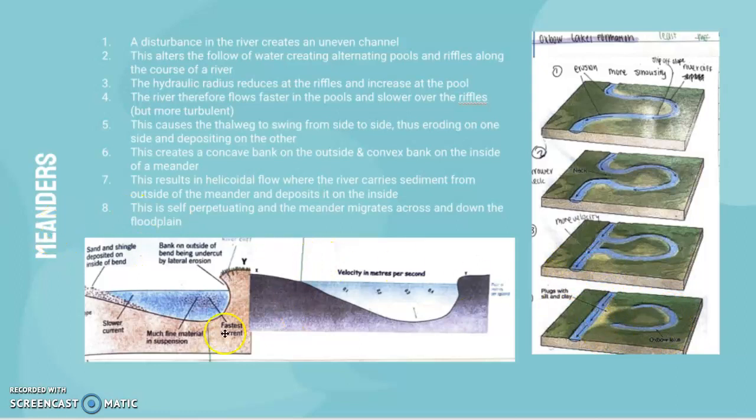This is a more detailed diagram of the river cliff and the slip-off slope. Here we have fast current and lateral erosion, then here we have deposition and a slower current. The velocity is much faster at the river cliff and much lower towards the slip-off slope.